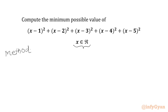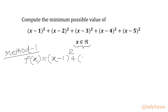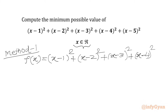Method number one. Here I am going to write the given expression equal to the function f(x). We will write f(x) = (x-1)² + (x-2)² + (x-3)² + (x-4)² + (x-5)².